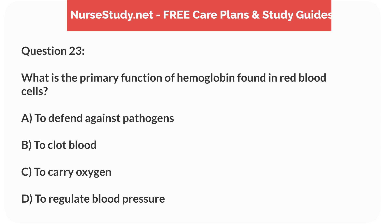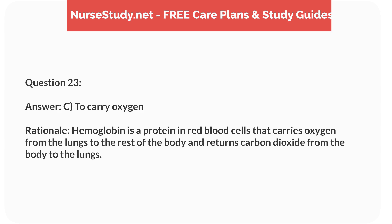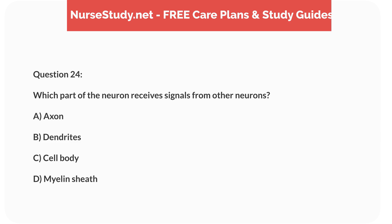Question 23: What is the primary function of hemoglobin found in red blood cells? A) to defend against pathogens, B) to clot blood, C) to carry oxygen, D) to regulate blood pressure. Answer: C, to carry oxygen. Rationale: Hemoglobin is a protein in red blood cells that carries oxygen from the lungs to the rest of the body and returns carbon dioxide from the body to the lungs.